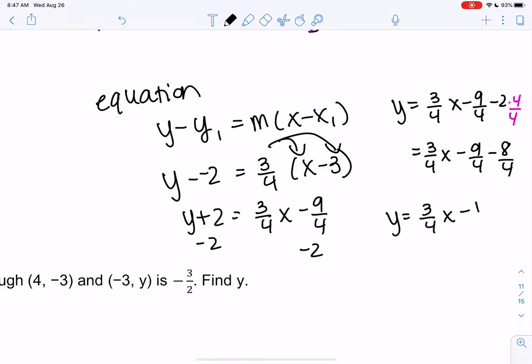So y equals 3 fourths x minus 9 fourths minus 2. So LCD is 4, so 4 over 4, since 2 doesn't have a denominator. So minus 9 fourths minus 8 fourths. So negative 9 and negative 8 would give me negative 17. And we'll just leave it as is. You'll notice as we approach calculus, we'll start to get uglier and uglier numbers. Don't let those freak you out. So this would be the equation of my line.